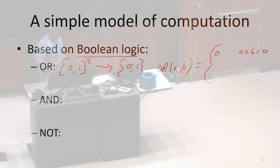That's going to be 0, provided that A and B are both 0. A is equal to B, which equals to 0. In any other situation, it's going to be 1. So it's going to be 1 otherwise.